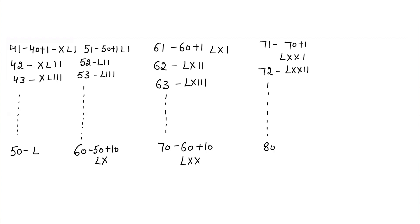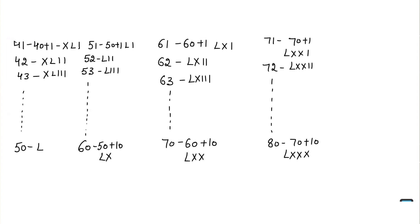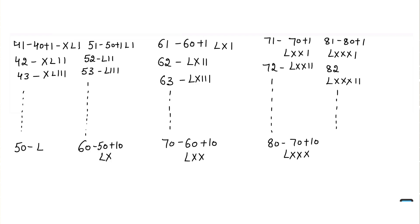71 can be written as 70 plus 1, which is LXXI. 72 is LXXII, and so on. 80 can be written as 70 plus 10 — since 70 is LXX, we add another X to get LXXX. 81 is LXXXI, 82 is LXXXII, and so on up to 90.